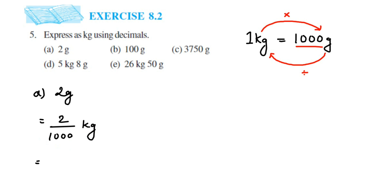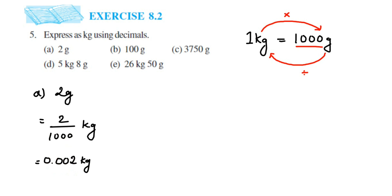There's a small trick: count the number of zeros in the denominator — here there are three zeros — so you place the decimal point directly, moving three places from the right side of the number. For 2 grams, pad with zeros to get 200, then place the decimal three places from the right: 0.002 kilograms is the answer.